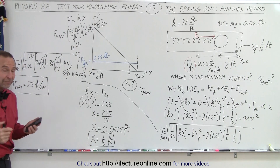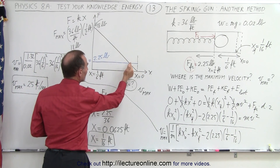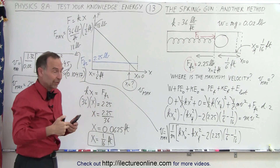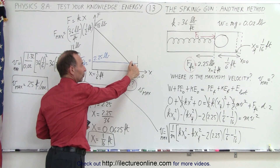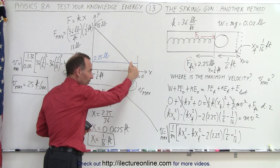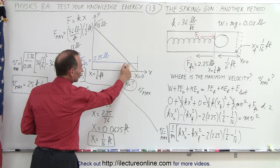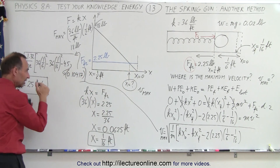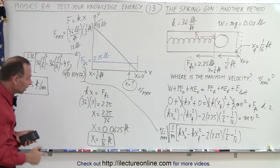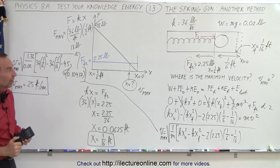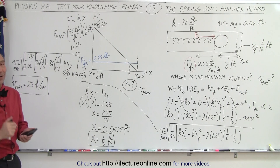So now we've found the position by looking at the forces. The exact position is where the two forces are equal to each other — that's where there's no longer any acceleration. Once the friction force becomes bigger than the spring force, the ball begins to decelerate. At the maximum point, the net force is zero, the acceleration is zero, and we reach the maximum velocity of 25 feet per second, which occurs at x equals 1/16th of a foot. That's another way to solve this gun problem.